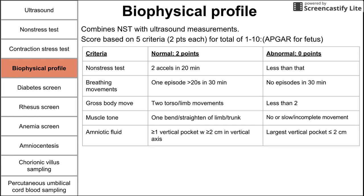The third criteria is gross body movements — two torso or limb movements earns two points; fewer than two is zero points. Next is muscle tone — one bending or straightening of a limb or trunk earns two points; no movement or slow and incomplete movements is zero points. The last criteria is amniotic fluid — at least one vertical pocket with a vertical axis of at least two centimeters deep earns two points; less than two centimeters is zero points.